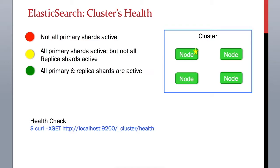In the response it returns three different statuses: red, green, and yellow. Red means that all your primary shards are not active, which means that your request will fail. Your cluster is in a failure state, there are no backups, and you need to investigate this.